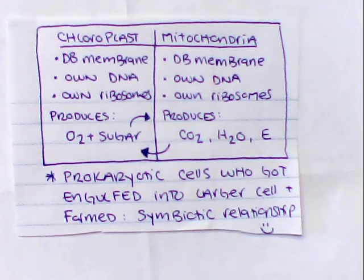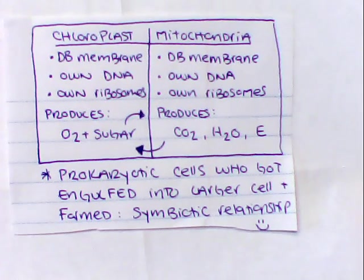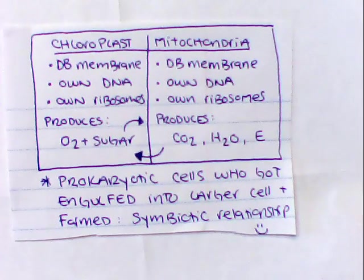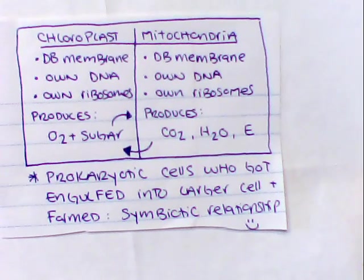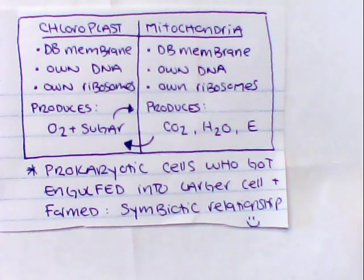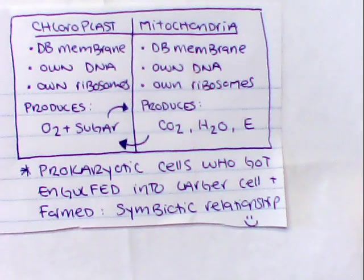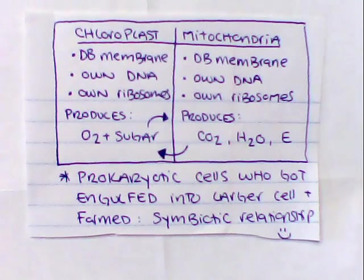When the chloroplast produces oxygen and sugar, it ships it to the mitochondria. The mitochondria in turn will break apart the oxygen and sugar and produce CO2 and water which will go back to the chloroplast. The energy that the mitochondria makes will allow the plant or the organism to actually grow, develop, reproduce, do whatever it needs.